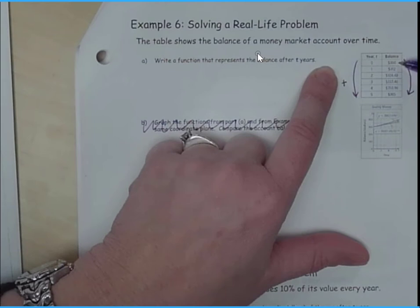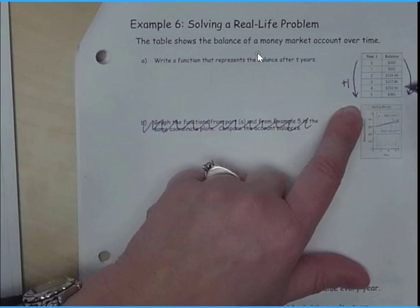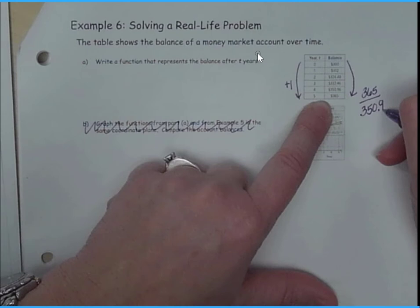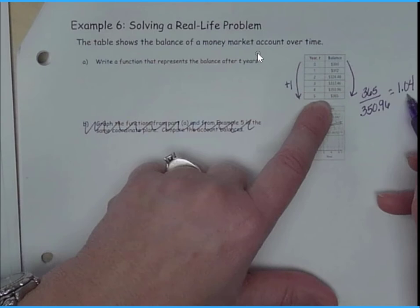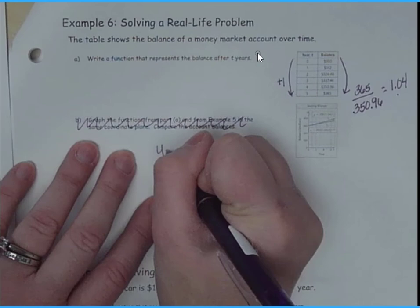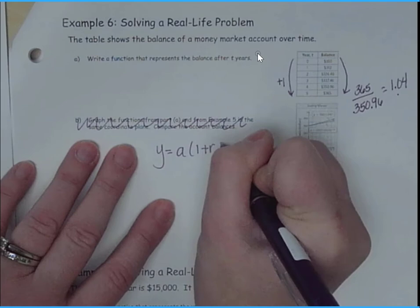So what I'm going to do is I'm going to do $365 divided by $350.96. When I do that, I end up with my growth rate of 1.04%. So I'm looking for my, so we have y equals a times 1 plus r to the t. Now, keep in mind, we're going to keep increasing. So I know it's an exponential increase here.